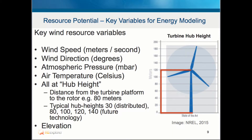Key variables for wind resource potential include wind speed, wind direction, atmospheric pressure, air temperature, and hub height. Hub height is the distance from the turbine platform on the ground to the rotor. Heights typically are 30 meters for distributed wind, and 80, 100, 120, and 140 meters for utility-scale wind. In the future you will likely see even taller turbines for harnessing wind potential higher up in the air.